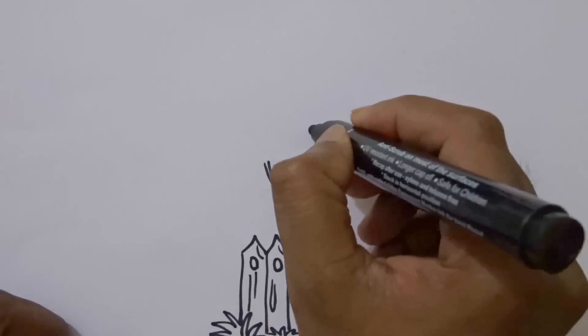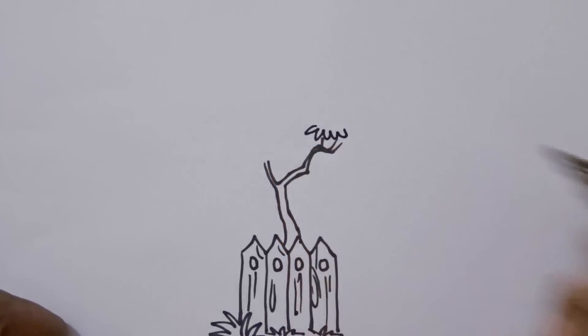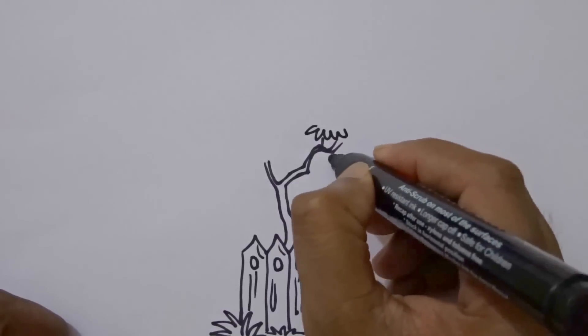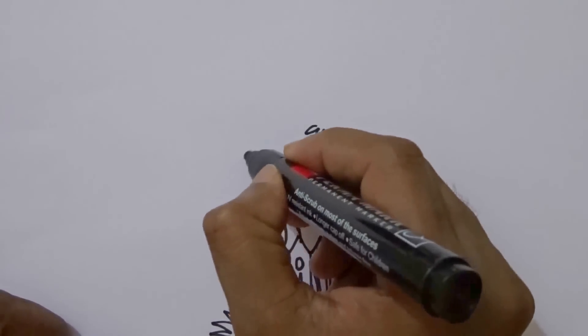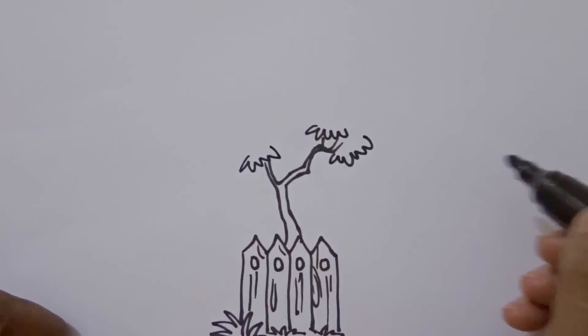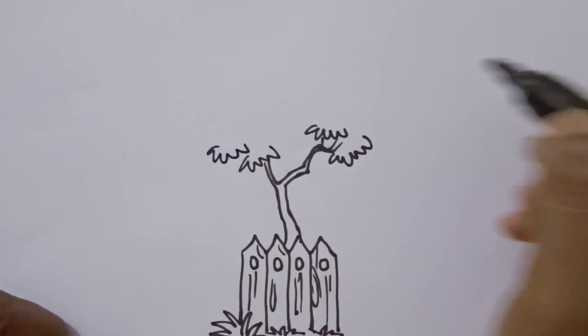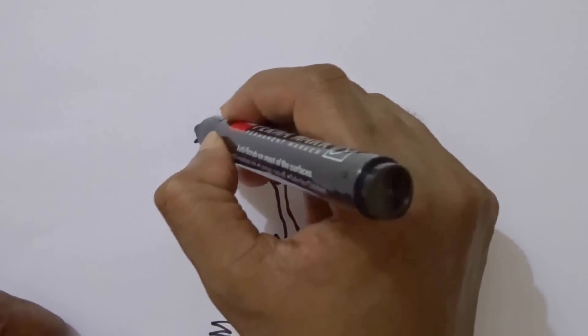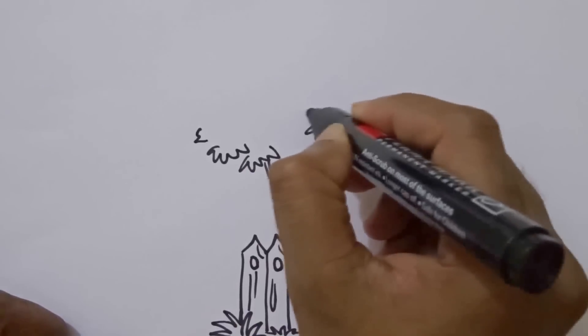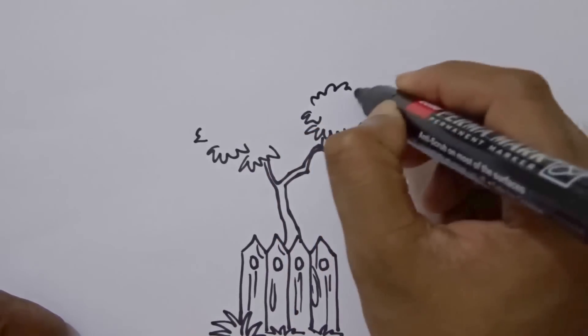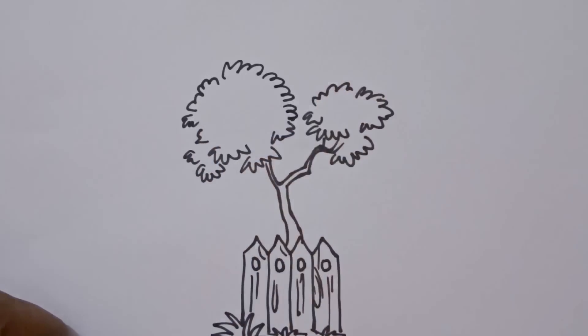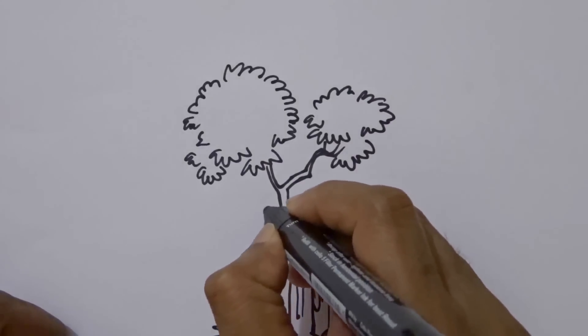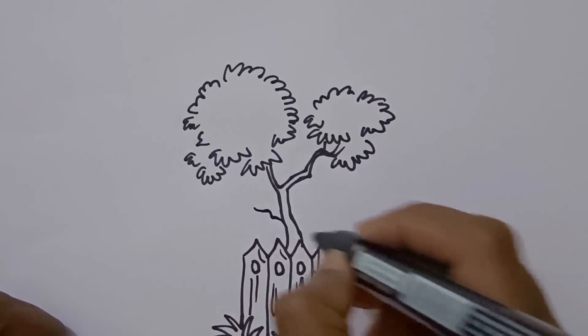To draw leaves, make shapes like this. Some more. Do the same on this side as well. Few more. Now continue this type of shape to complete our tree. We can add some more branches if you like.